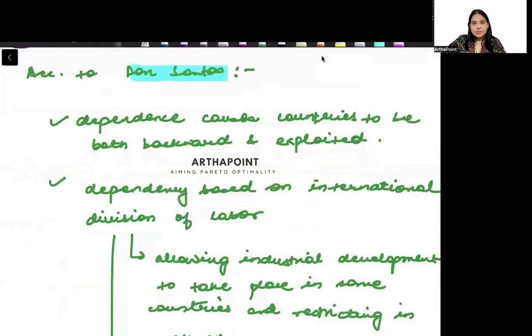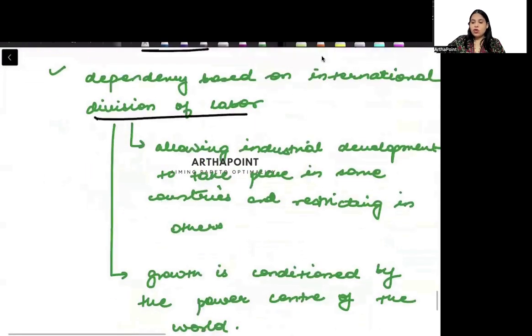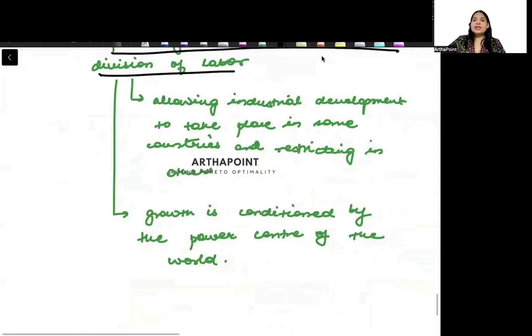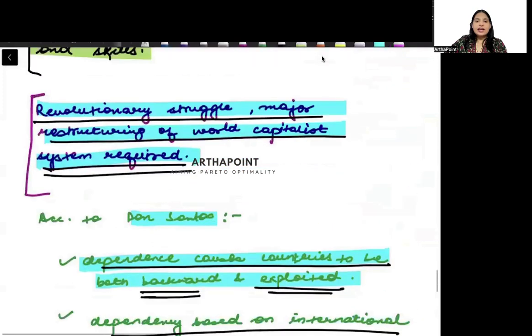According to Dos Santos, dependence causes countries to be both backward and exploited. As long as you are dependent on other countries, you will remain backward and exploited. Dependency is based on international division of labor - what labor is where, skilled labor versus unskilled labor. This division of labor determines how growth takes place in center and periphery, allowing industrial development in some countries and restricting development in others.